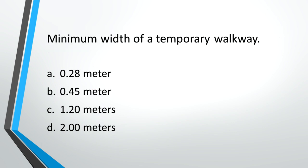Minimum width of a temporary walkway. A: 0.28 meter, B: 0.45 meter, C: 1.2 meters, D: 2 meters. Answer: C, 1.2 meters.